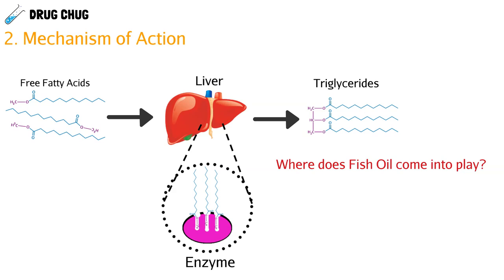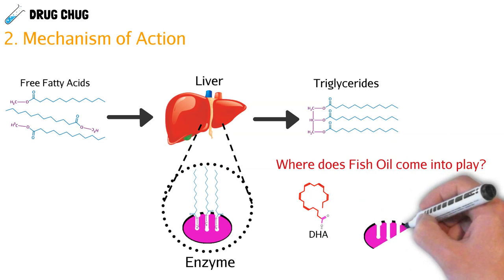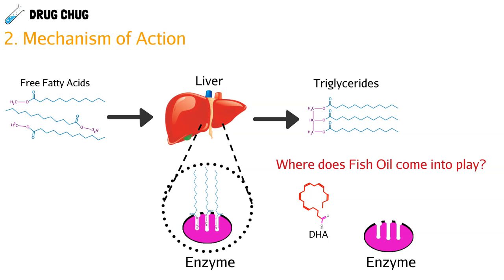So how do fish oils reduce this process? The direct mechanism is actually still under research and not fully known, but it's thought that when we have DHA or EPA in our system, they come into the enzyme and block its active site. When we block the active site, it stops free fatty acids from being put together, which stops triglyceride formation and lowers triglyceride levels. There are more theories, but we'll stick to this one as it's the most straightforward — the other theories will be linked in the description.